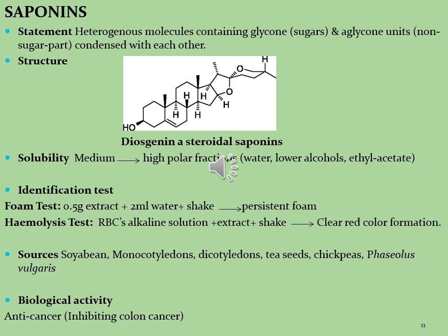Let's see what are the saponins. Saponins are heterogeneous molecules containing a glycone, which is the sugar part, and an aglycone, which is the non-sugar part. These two units are linked together and generally known as saponin molecules. In the structure, the sugar moiety glycone is linked with the steroid moiety, forming steroidal saponins. The molecule shown is diosgenin.